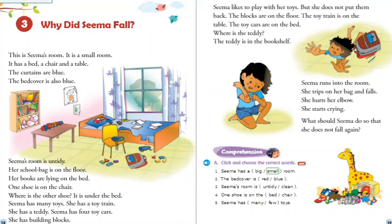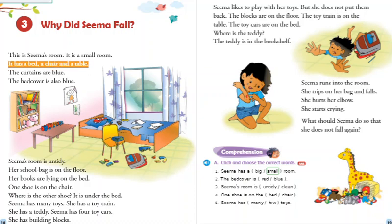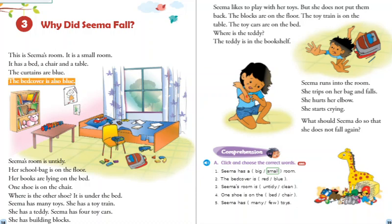Why did Seema fall? This is Seema's room. It is a small room. It has a bed, a chair and a table. The curtains are blue. The bed cover is also blue.